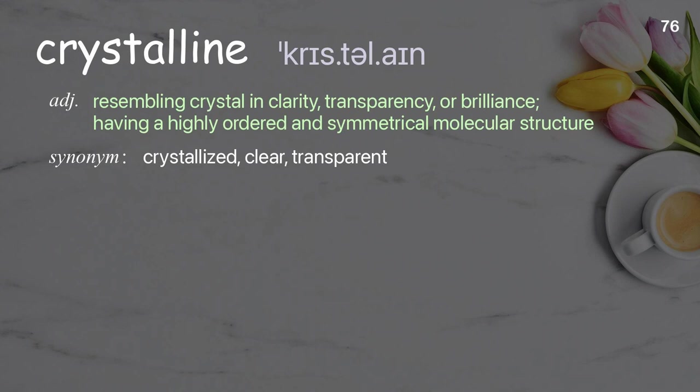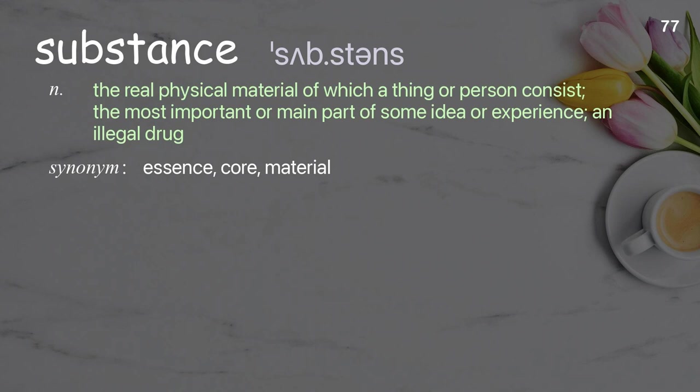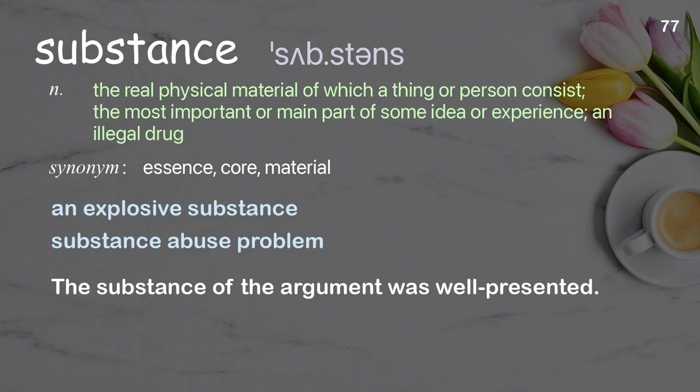Crystalline: having a highly ordered and symmetrical molecular structure, or brilliance. Examples: crystalline structure, crystalline water. The geologist found a beautiful specimen of a crystalline mineral. Substance: the real physical material of which a thing or person consists; the most important or main part of some idea or experience; an illegal drug. Examples: an explosive substance, substance abuse problem. The substance of the argument was well presented.